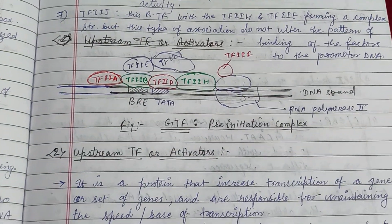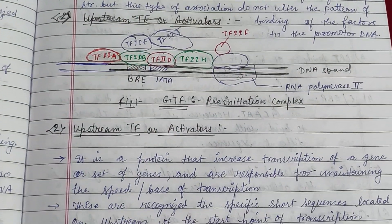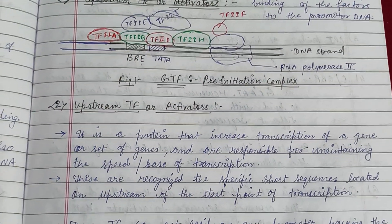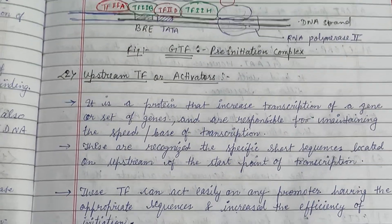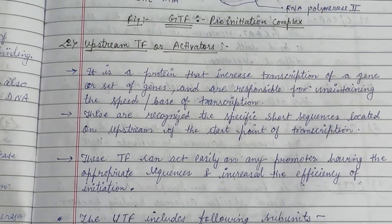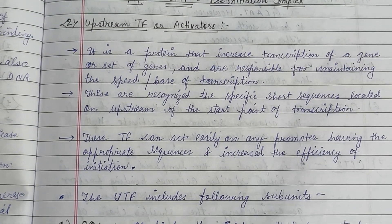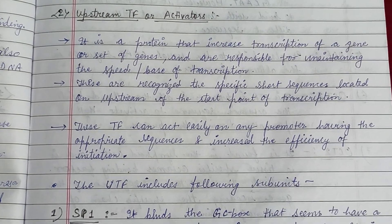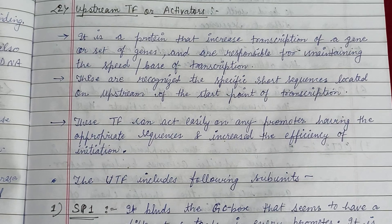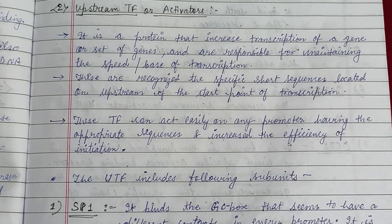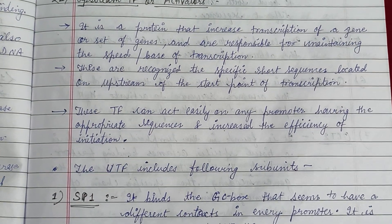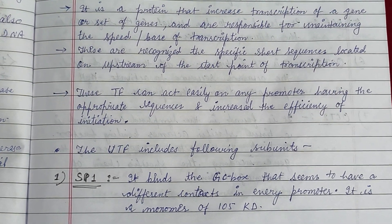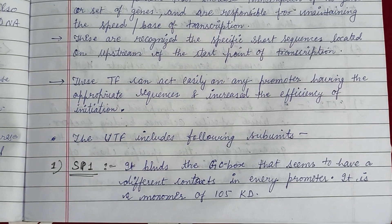Here is the figure of the general transcription factor or pre-initiation complex. The second group is the upstream transcription factor or activator, which increases transcription of a gene or set of genes and is responsible for maintaining the speed or the base rate of transcription.